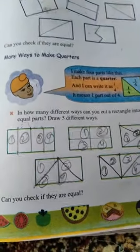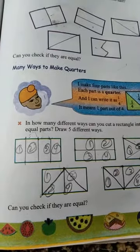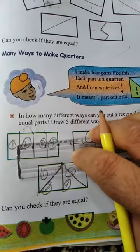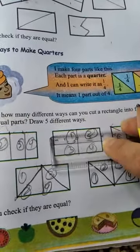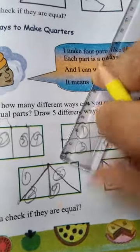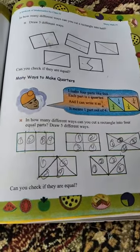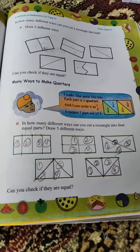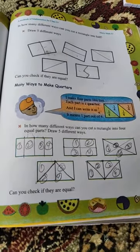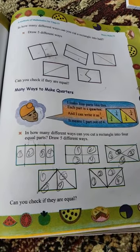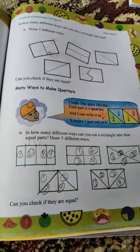Can you check if they are equal? Check, measure each part. One centimeter, one centimeter, two centimeters, two centimeters. Each part is equal. You can use scale to check they are equal. You can divide rectangles into quarters and halves using multiple methods. Thank you for your attention. Wassalam, Allah Hafiz.